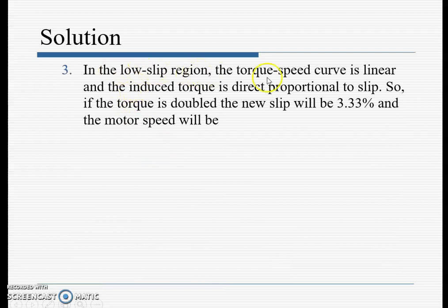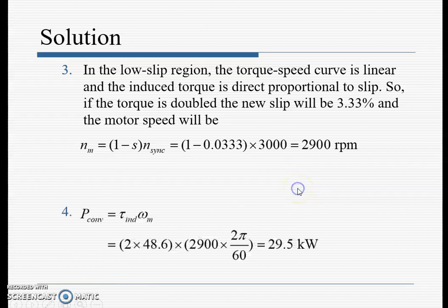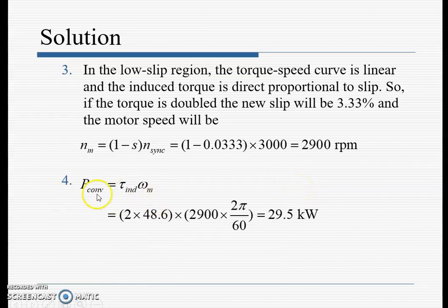In the low-slip region, the torque-speed curve is linear and induced torque is directly proportional to slip. If the torque is doubled, the new slip will be 3.33%. The new motor speed is n_m = (1 − s) × n_s = 2900 rpm. The power supplied by the motor at doubled torque comes out to be 29.5 kW.